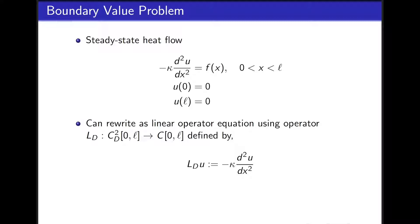Remember, this is the space of all twice continuously differentiable functions that already satisfy homogeneous Dirichlet boundary conditions, and has a range of all continuous functions. The operator is defined such that it is negative κ times the second derivative of u. So L_D takes a function and returns negative κ times the second derivative of that function with respect to x.